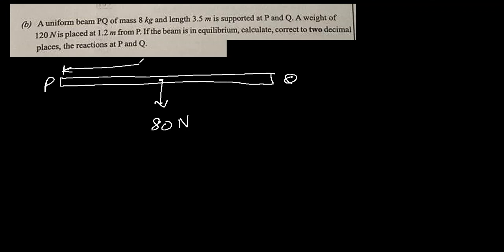A uniform beam PQ of mass 8 kg - this is the beam from P to Q. Mass is 8 kg, meaning from the center there will be a weight of 80 newtons downwards. Length is 3.5 meters. It's supported at P and Q both. A weight of 120 newtons is placed at 1.2 meters from P. The center of this beam will be at 1.75 meters, half of this. The beam is in equilibrium; calculate correct to two decimal places the reaction at P and Q.